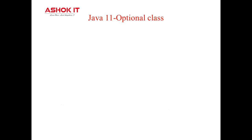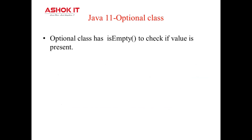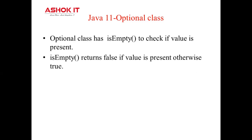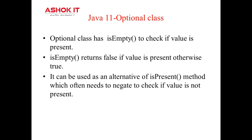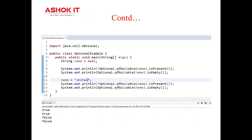Java 11 also updated the Optional class by introducing the isEmpty method. This isEmpty method checks if a value is present or not. It returns false if a value is present, otherwise it returns true. It can be used as an alternative for the isPresent method, which often needs to be negated to check if a value is not present.